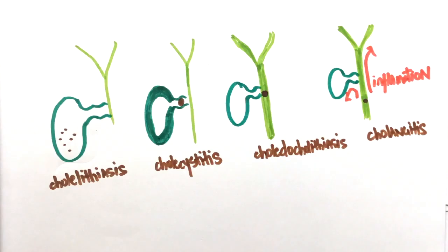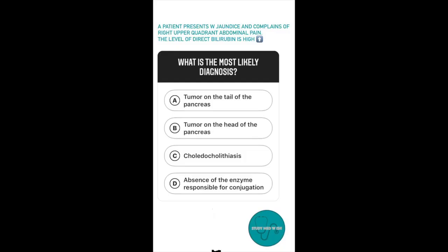Having clarified these four pathologies, let's take a look at a case. A patient presents with jaundice and complains of abdominal pain on the right upper quadrant. The level of direct bilirubin is high. What is the most likely diagnosis?